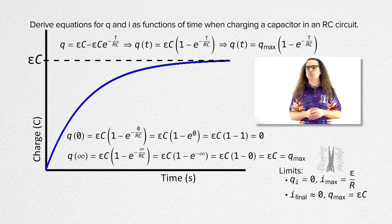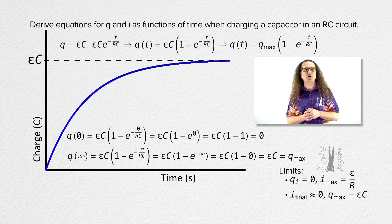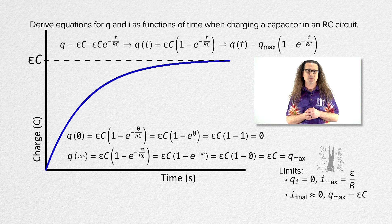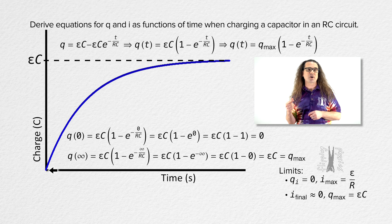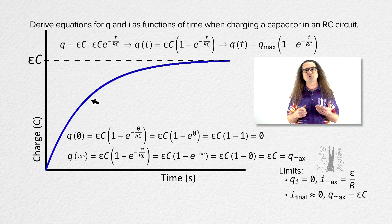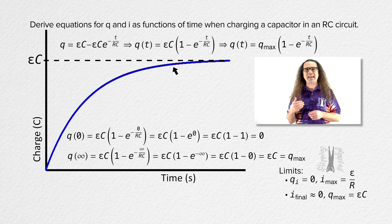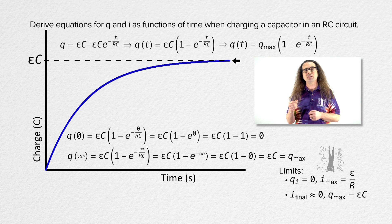This is the graph for charging an initially uncharged capacitor through a resistor as a function of time. You can see the initial charge is zero, the charge increases according to the equation we solved for, and it asymptotes to the maximum charge equal to EMF times capacitance.